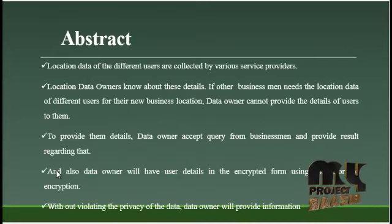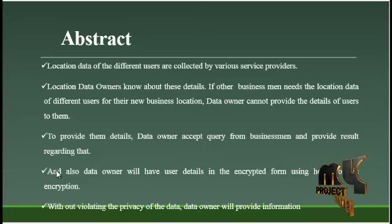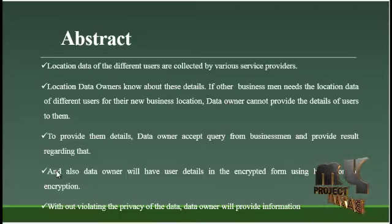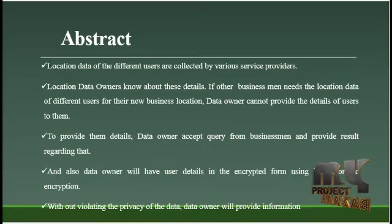Today, vast amounts of location data are collected by various service providers. Location data owners have a good idea of where their customers are most of the time. Other business owners want to use this information for location analytics, such as finding the optimal location for a new branch. However, location data owners cannot directly share their data with other businesses, mainly due to privacy and legal concerns. In this paper, we propose a privacy preserving solution in which location-based queries can be executed and answered by location data owners without sharing the data with other businesses and without accessing the customer list of the business that's in the query. We utilize a partially homomorphic cryptosystem as the building block of the proposed protocols.